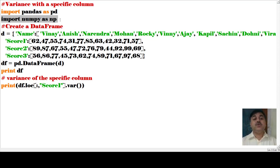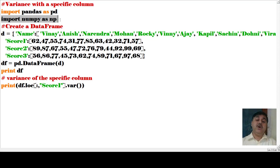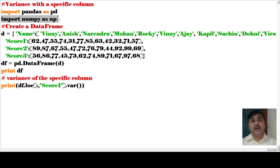In this dictionary, we have a field called 'name' which contains combinations of character variables. Then we have 'score1', which has a different pattern of scores. After score1, score2 values have been taken, and then score3 values are also included in this data structure.